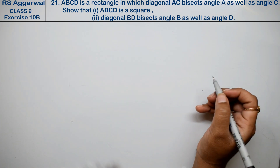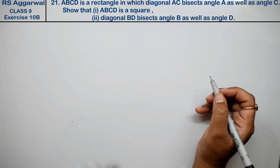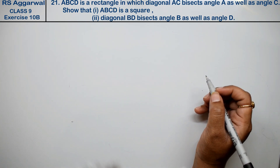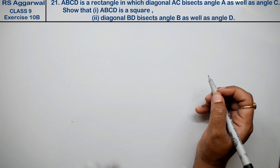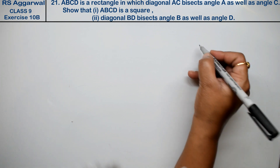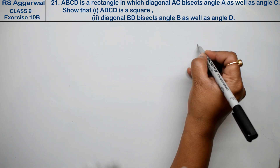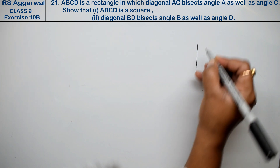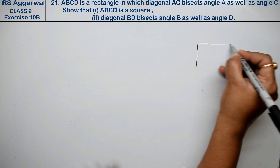Let's do question number 21 of exercise 10b, that is coordinate geometry. Question number 21 — ABCD is a rectangle.